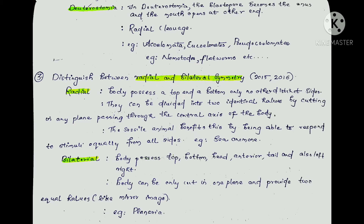So the difference between Protostomy and Deuterostomy: in Protostomy, the blastopore forms the mouth first, then the anus. In Deuterostomy, the blastopore forms the anus first, then the mouth. Protostomy involves spiral cleavage; Deuterostomy involves radial cleavage.